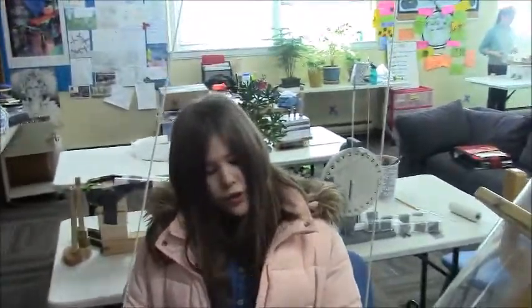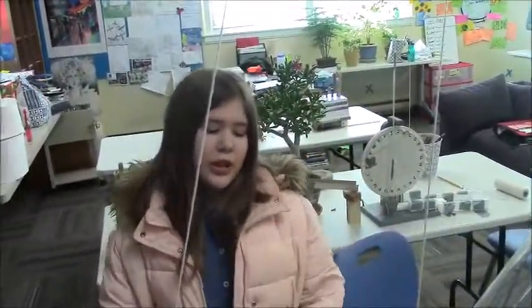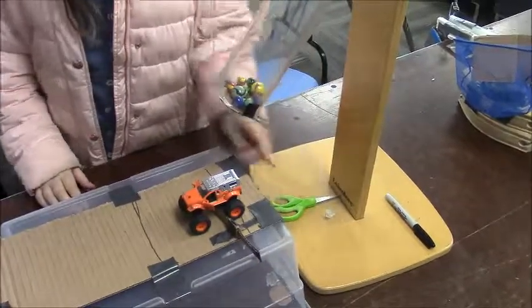Okay, so for our Rube Goldberg machine, we will start off by pulling out this lever, which will cause the car to fall into the basket.